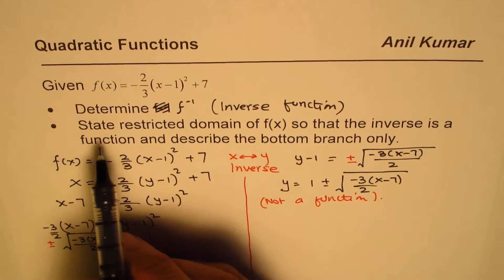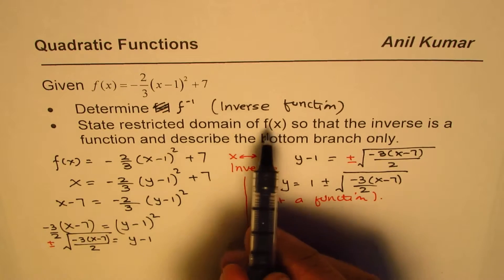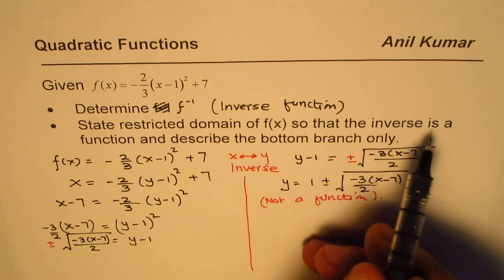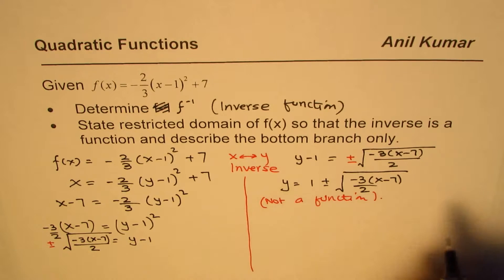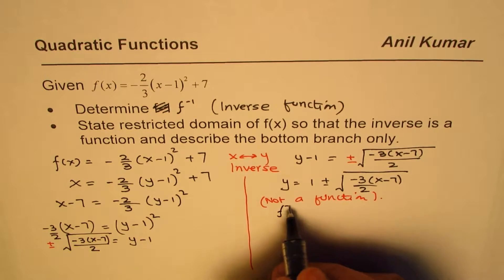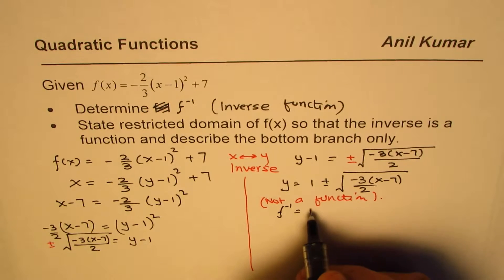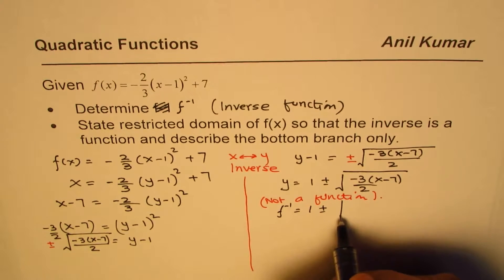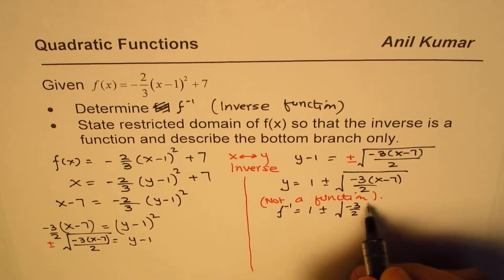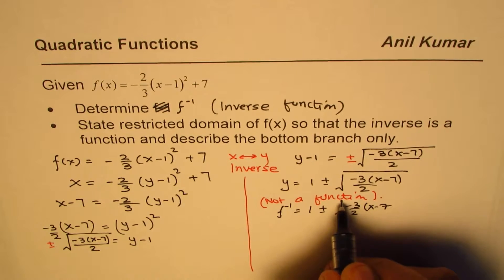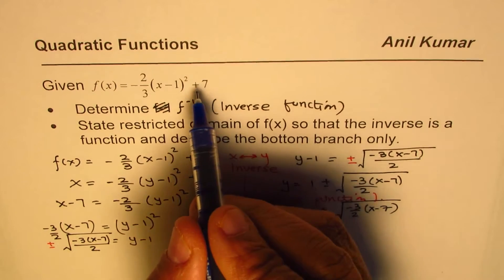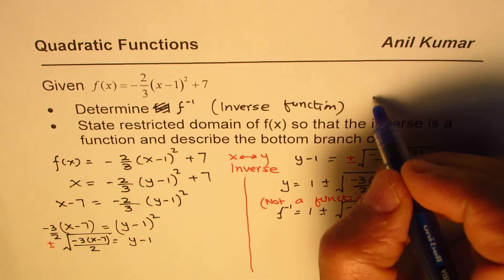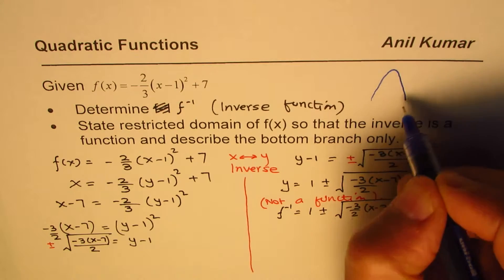To make it a function, we have to restrict the domain of the initial function itself. That is where the second part comes in. Part b states: restrict the domain of f(x) so that the inverse is a function and describe the bottom branch only. The function here is a parabola which opens downwards.